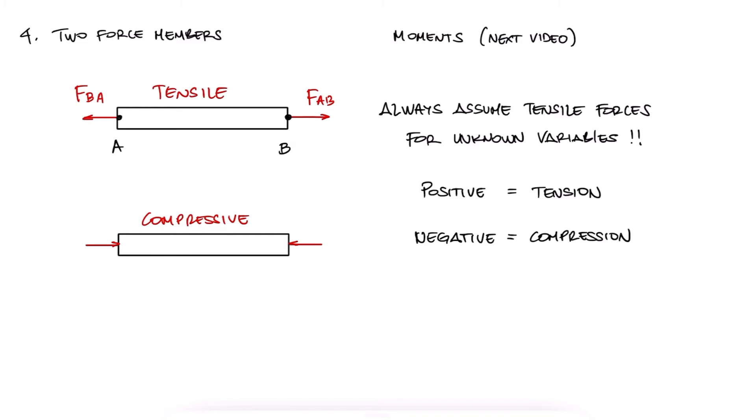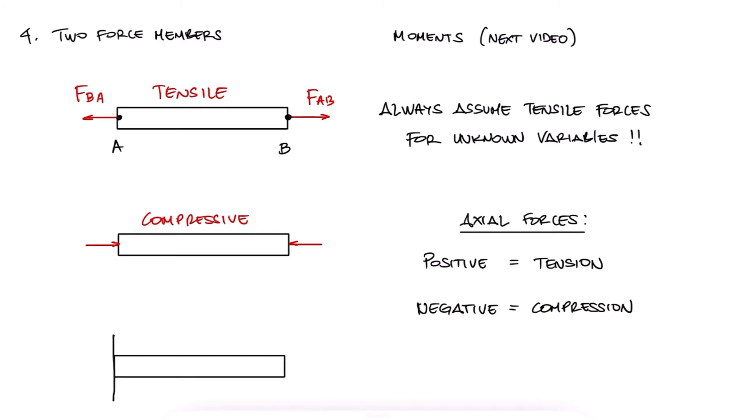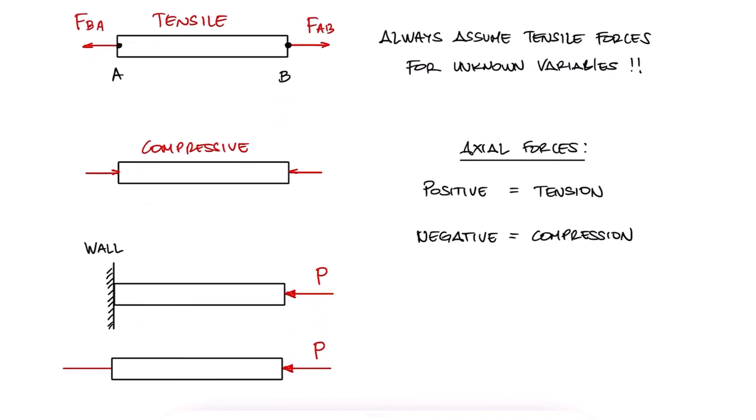This bodes well for the general convention that a positive internal axial force is tension, and a negative internal axial force is compression. So even if a force should clearly be a compressive force, and therefore drawn in a compressive direction in a free body diagram,